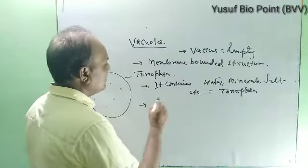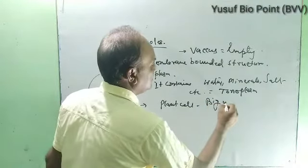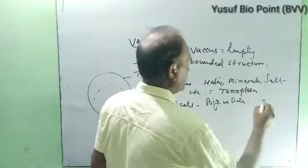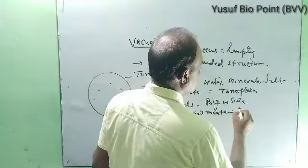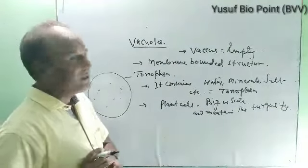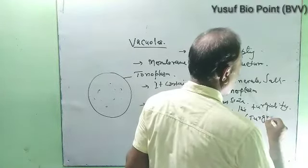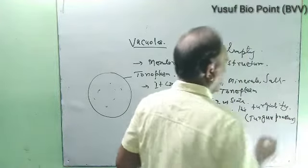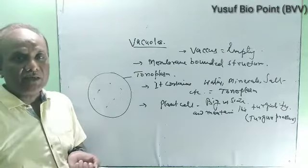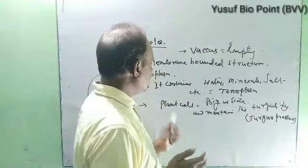Vacuoles are generally found in plant cells, where they are big in size. They help maintain turgor pressure — when plants absorb water the vacuole expands, and when it releases water it collapses. This pressure, known as turgor pressure or turgidity, is maintained by the vacuole in plant cells.